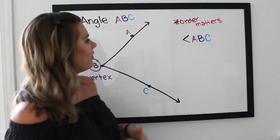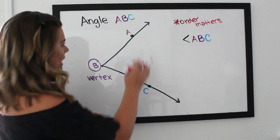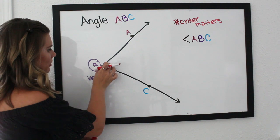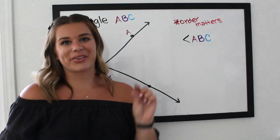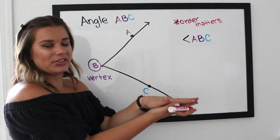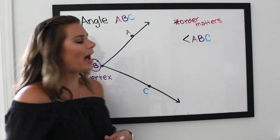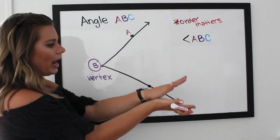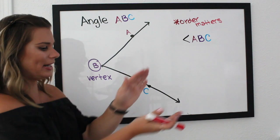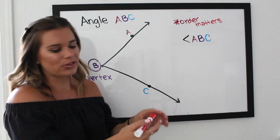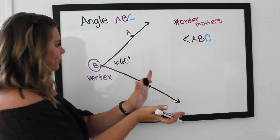For example, if you have angle DEF, the vertex must be E because it's always the center letter. Now there's another detail: angles have a measurement. We can measure how wide this angle is open — a 90-degree angle is a right angle, and this one looks like about 60 degrees. We have notation for the measure of an angle as well.